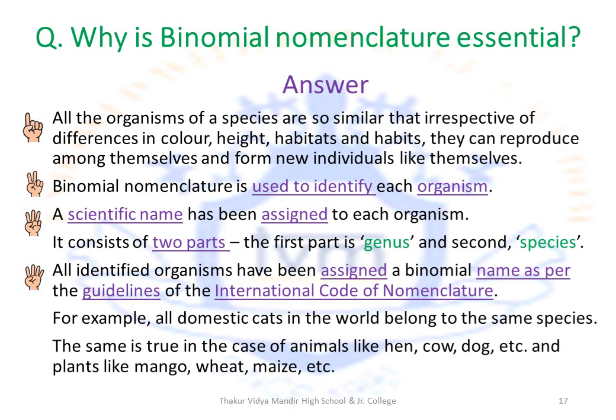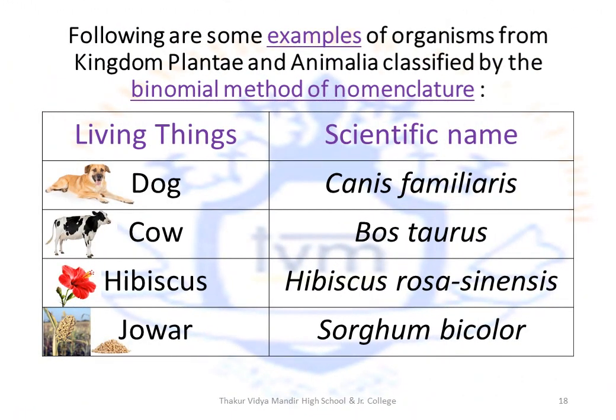For example, all domestic cats in the world belong to the same species. The same is true for animals like hen, cow, dog etc. and plants like mango, wheat and maize. Here are some examples from Kingdom Plantae and Animalia classified by the binomial method: Dog is called Canis familiaris — also called Canis lupus familiaris when believed to have descended from the wolf family. Cow is called Bos taurus. Hibiscus is called Hibiscus rosa-sinensis. Jawar is called Sorghum bicolor.